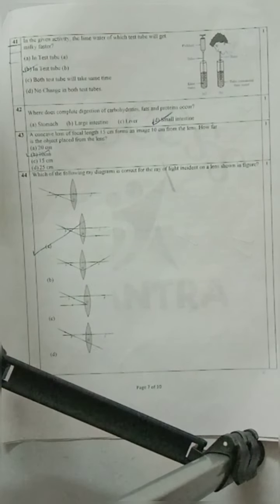Question 43: A concave lens of focal length 15 centimeter forms an image 10 centimeter from the lens. How far is the object placed from the lens? You have to calculate it. Option B is your correct option - 30 centimeter.